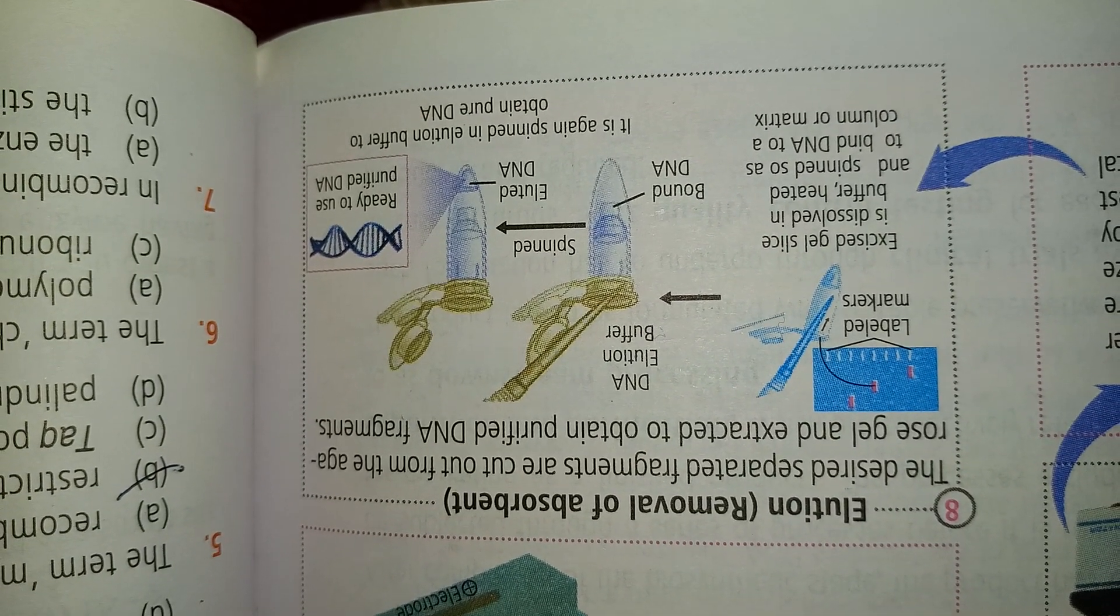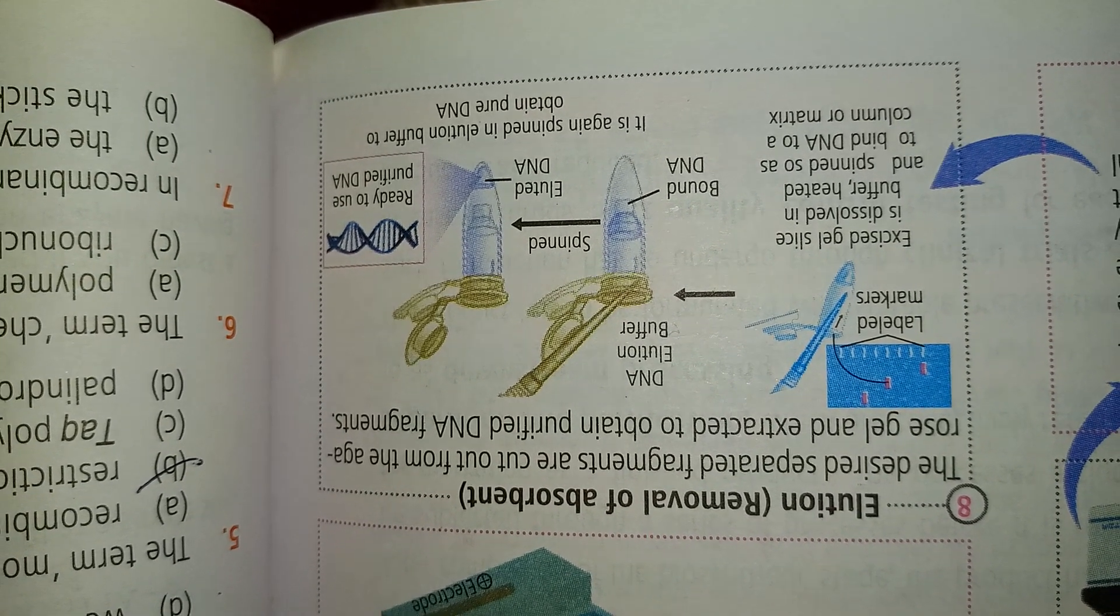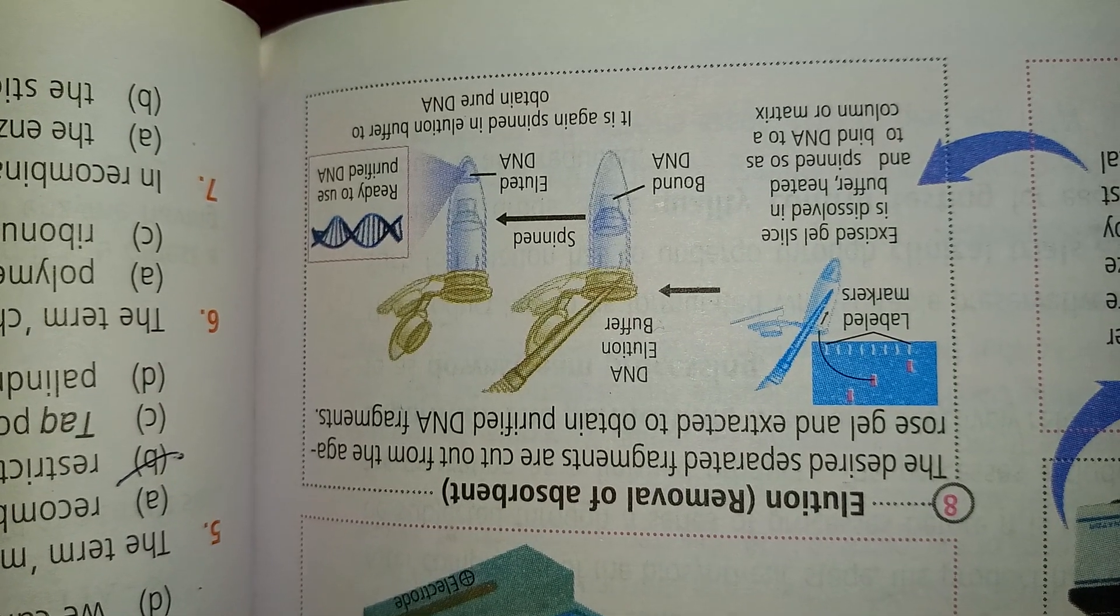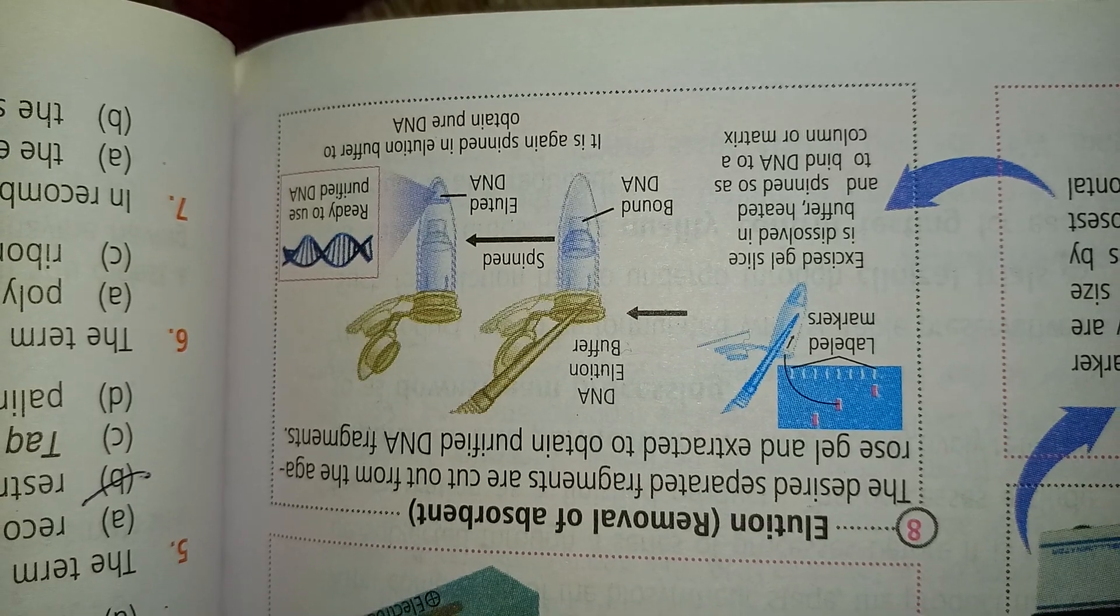Bounded DNA is spun and eluted. Ready to use purified DNA is then obtained by spinning in elution buffer to obtain pure DNA.